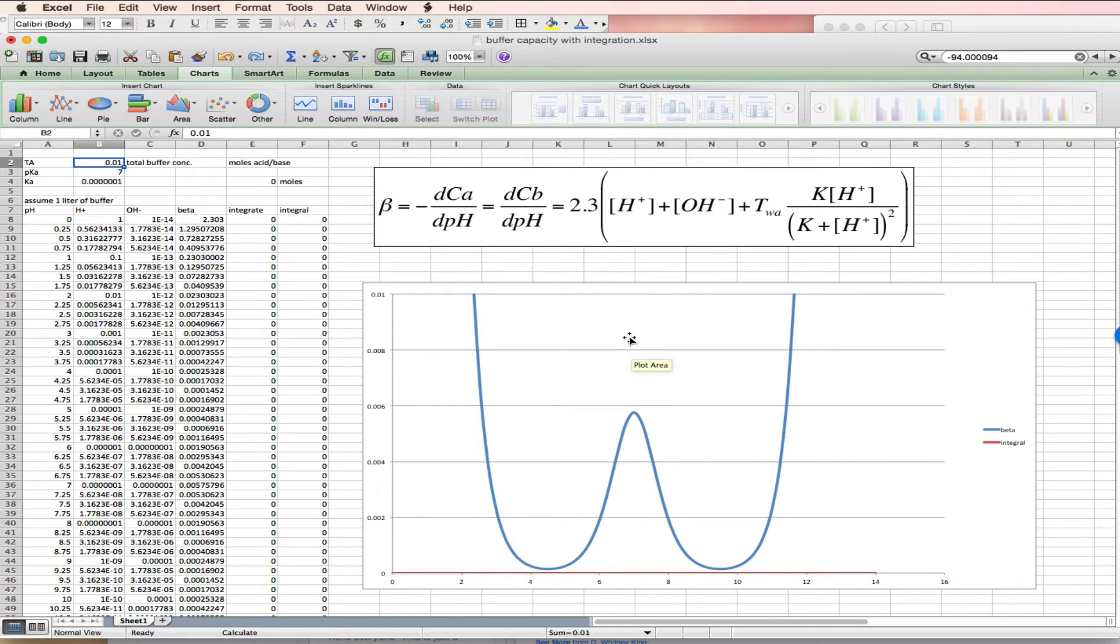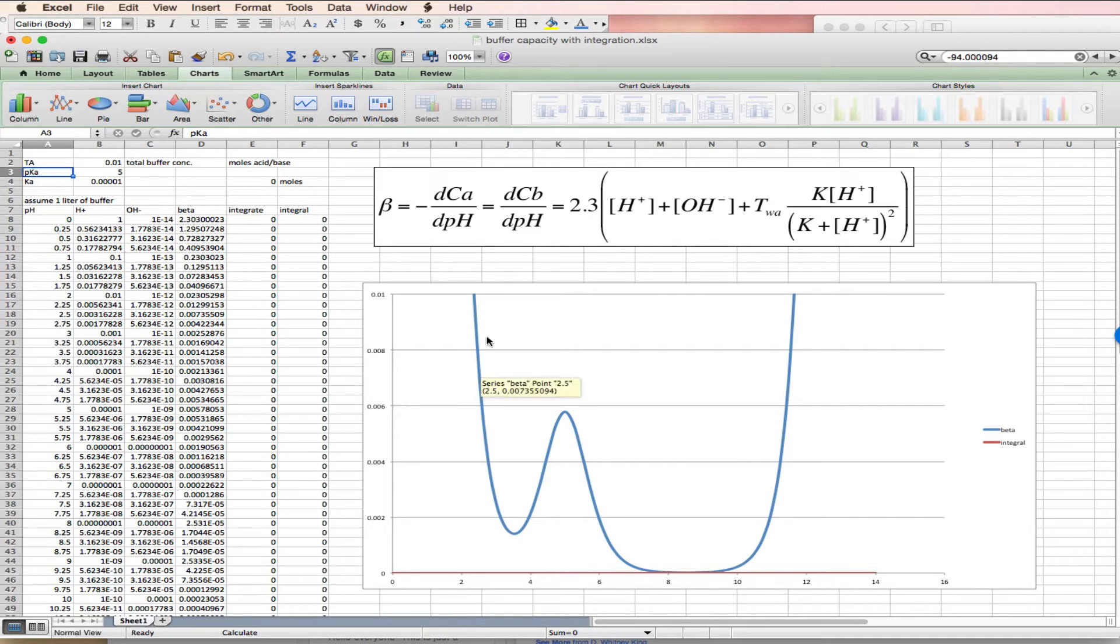So as you increase the weak acid concentration, this spike in the buffer capacity goes up. As you change the pKa, it shifts to the right or to the left. So here we are with an example of the buffer capacity plotted as a function of pH for strong acid, strong base, and a weak acid with a pKa of about 5.